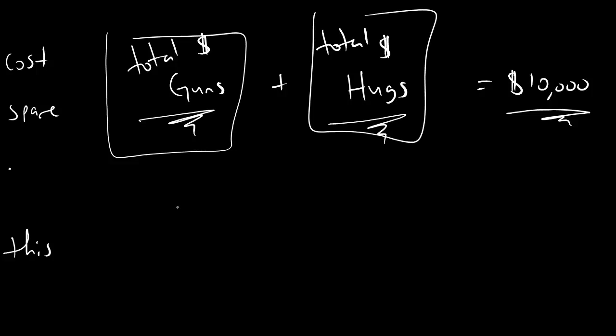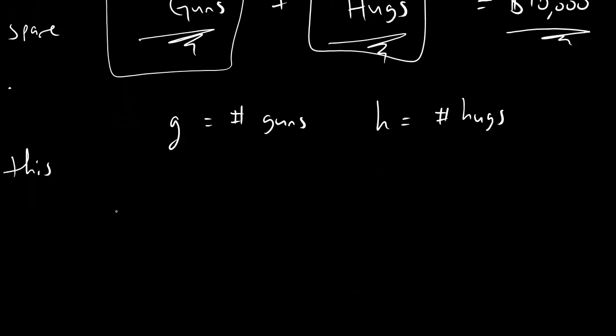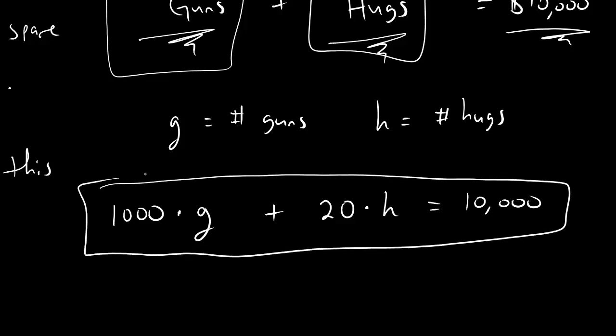And now to finish the budget equation, all we have to do is actually come up with the math expression for these two blocks of stuff. Here's how much we spend on guns. Let's say g is our variable for number of guns. And let's say h is our variable for number of hugs. Well, if we spend $1,000 per gun, then how much we spend on guns is simply $1,000 times the number of guns that we buy. And if we spend $20 per hug, then the total amount of money we spend on hugs is $20 for every hug, which is $20 times the number of hugs we get. And that total should still be equal to $10,000. And this is it, people. This is exactly the budget constraint or the budget equation for the fact that we're going to fight zombie Superman using guns and hugs.